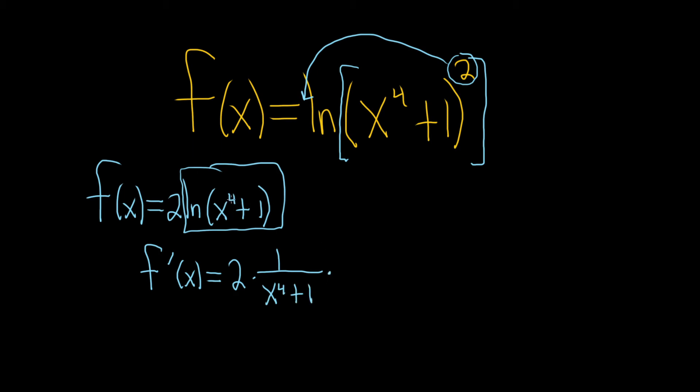So the derivative of x to the fourth, using the power rule, will just be 4x cubed, and the derivative of one is zero, so I won't bother to write it.